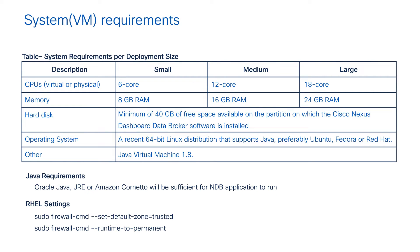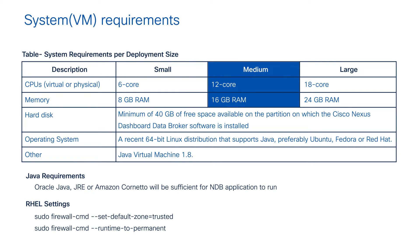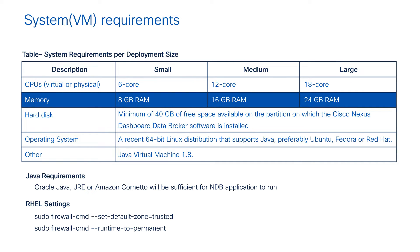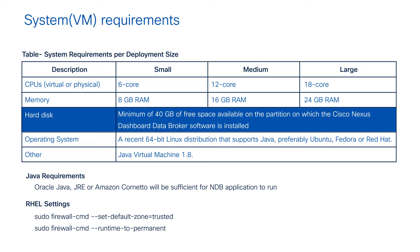Let's touch on VM requirements, which are categorized based on the number of NDB boxes managed by a single controller. There are three categories: small, medium, and large. For small, the virtual CPU cores required is 6; medium is 12 cores; large is 18 cores. For memory, small requires 8 GB, medium 16 GB, and large 24 GB. All three categories require at least 40 GB of disk space.